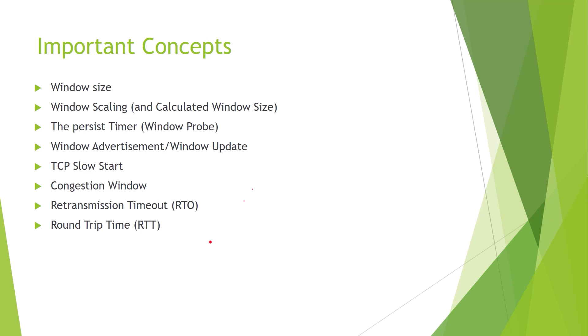The window size is the size of the receiver's available buffer — whatever is available and ready to accept more data. It is also called windows update, window advertisement, or advertised window — all the same. A common interview question is: what is the difference between window size and calculated window size?